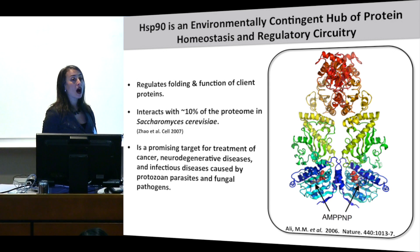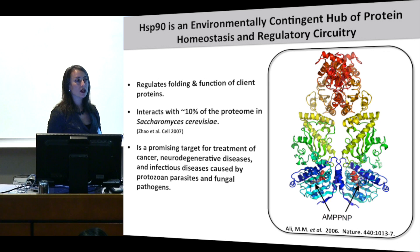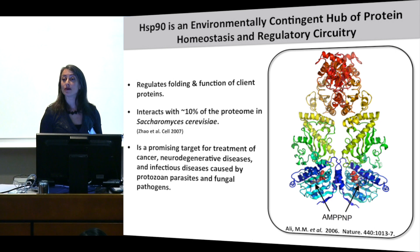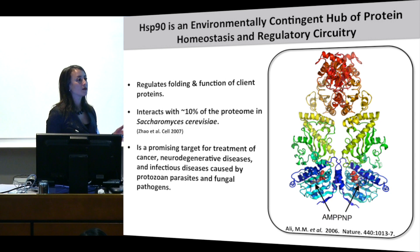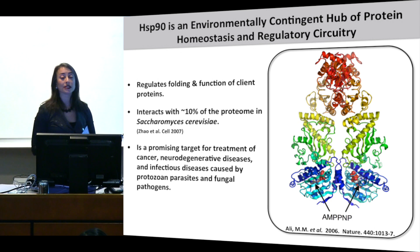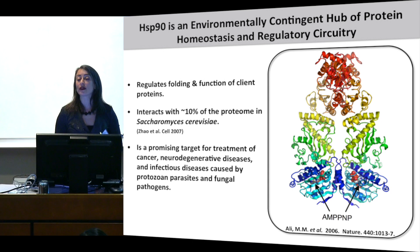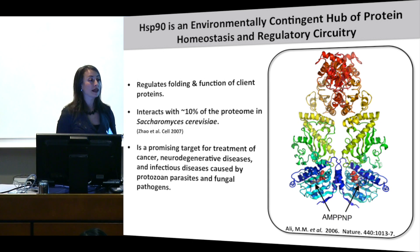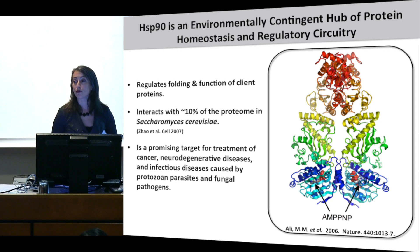Hsp90 function is inherently modulated by conditions that affect protein folding, such as environmental stress. For example, at elevated temperatures like those encountered with fever, you have increased protein misfolding and Hsp90 function can be overwhelmed — it gets titrated away from specific client proteins to deal with general protein folding problems. So it's really an environmentally contingent hub of regulatory circuitry, regulating many signaling regulators such as calcineurin and RAS signaling.